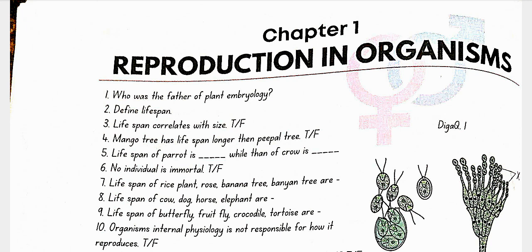Lifespan correlates with size — false. Mango tree has a lifespan longer than a peepal tree — false. Lifespan of parrot is 140 years while that of crow is 15 years.